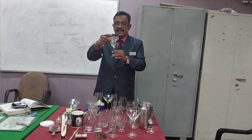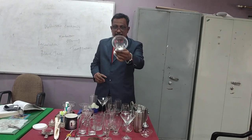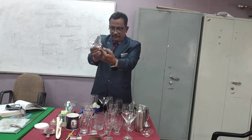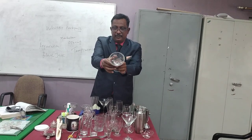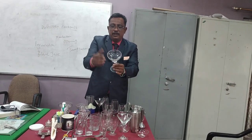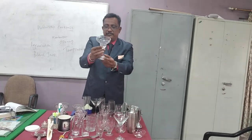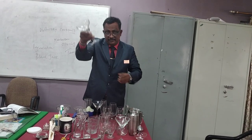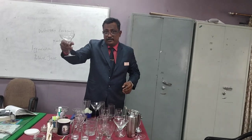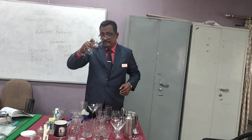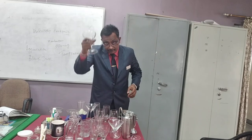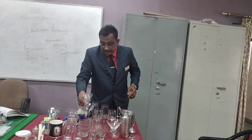This is a margarita glass. You can see a hump in between and the shape is round with a big stem. This is called a margarita glass. Margarita is a cocktail drink, and you can serve margarita in this glass.